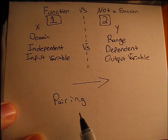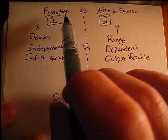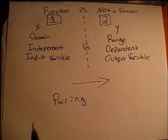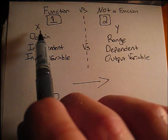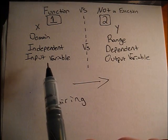Here we are deciding if a pairing from group 1 to group 2 is a function or not a function. In group 1 we are given x, domain, independent, and input variable.